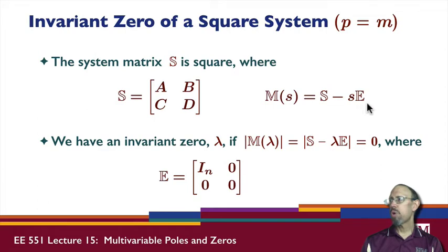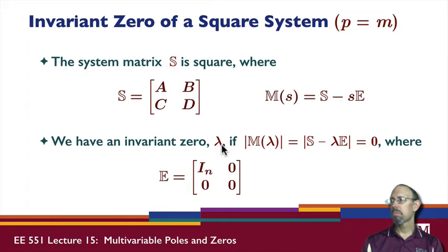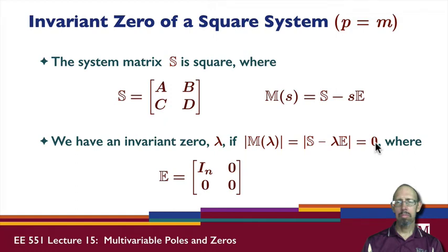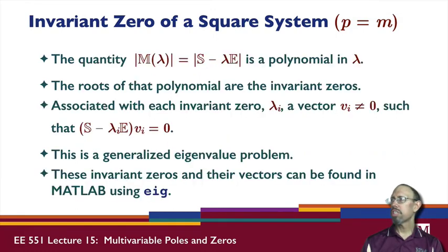If I take this quantity and compute its determinant, that gives me a polynomial. The root of that polynomial is an invariant zero. So lambda will satisfy the determinant condition — plugging in lambda gives zero. That's what happens when we have a square system.